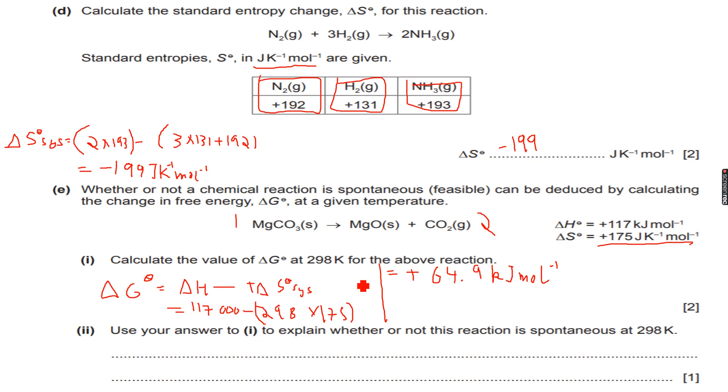We know that for a reaction to be spontaneous or in other words feasible, delta G naught must be negative. But since delta G naught is positive in this case, the reaction is not spontaneous at 298 Kelvin.